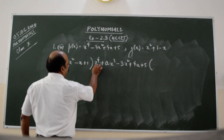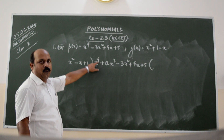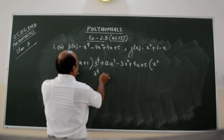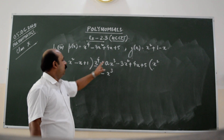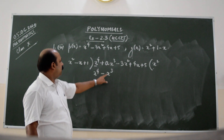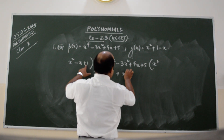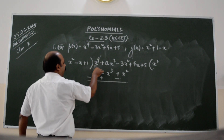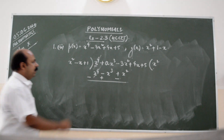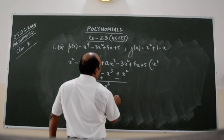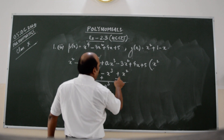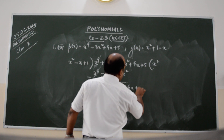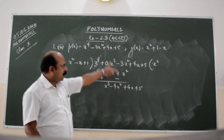Now look at the first term of the dividend: X to the power 4. X squared times X squared gives X to the power 4, so the first term of the quotient is X squared. Multiplying: X squared times (X squared minus X plus 1) gives X to the power 4 minus X cubed plus X squared. We write minus X squared just below X squared and plus X squared. On subtraction, X to the power 4 cancels, giving us X cubed. We also get minus 3X squared minus X squared, which is minus 4X squared, and carry down plus 4X and plus 5.